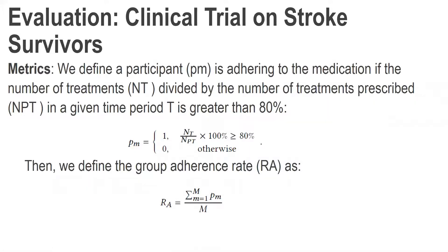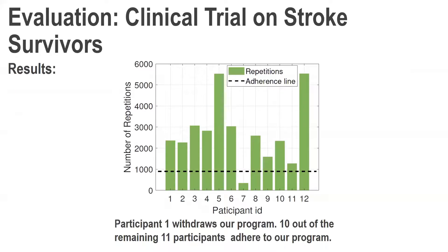For all enrolled stroke survivors, we evaluated user adherence to our program and rehabilitation efficacy. We defined a participant as adherent if the number of treatments completed divided by the number of treatments prescribed in a given time period exceeded 80%. Group adherence is defined as the percentage of people adherent to our intervention program. One participant withdrew from our program at midterm; 10 of the remaining 11 participants were adherent to our program.